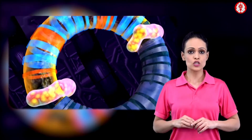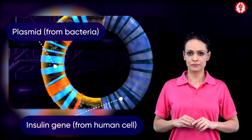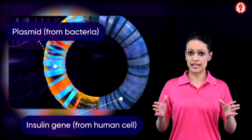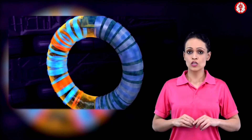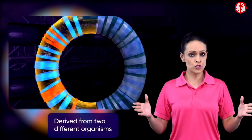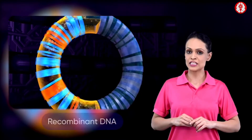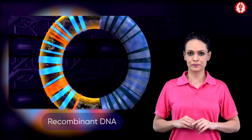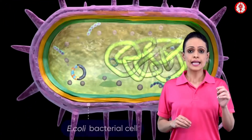The plasmid is treated with the same restriction endonuclease enzyme, which produces two sticky ends. Enzyme ligase is then added. This ligase joins the two ends of the plasmid with the two ends of the insulin gene. Such a DNA formed by the union of fragments of genetic material derived from two different organisms is called recombinant DNA.